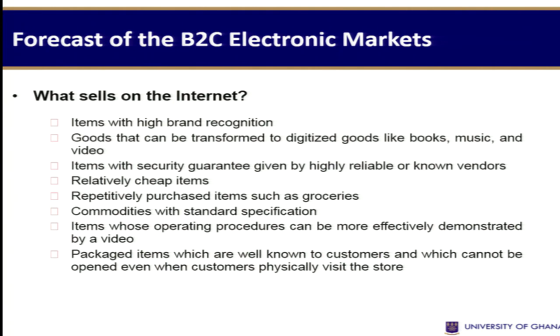The question to ask at this point is: what sells on the internet? What types of things can be sold in business-to-consumer electronic markets? Almost everything. You can sell items with high brand recognition, items with no brand name, cheap items, expensive items, groceries, leather shoes, packaged items, and unpackaged items. There's no limit to the spectrum of things that can be sold over the internet in business-to-consumer electronic markets.